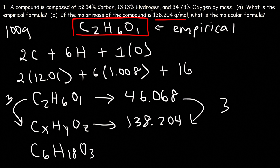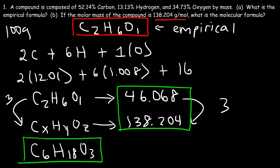That's how you find the molecular formula from the empirical formula. Divide the molar mass of the molecular formula by the molar mass of the empirical formula. Whatever number you get, multiply the subscripts of the empirical formula by that number, and that gives you the molecular formula.